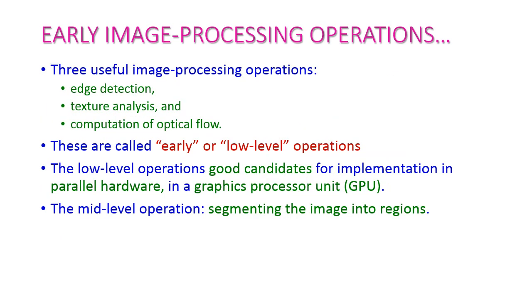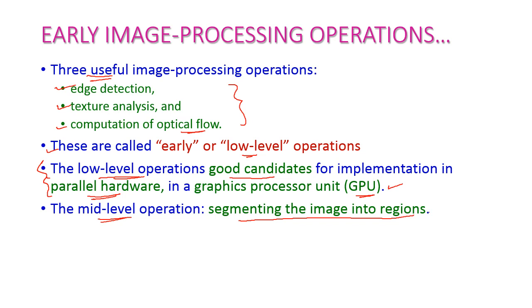There are three useful operations in image processing: edge detection, texture analysis, and computation of optical flow. These three are basic or low-level operations and are good candidates for implementation in parallel hardware — that is, GPU, or Graphics Processing Unit. When it comes to mid-level operations, these involve segmenting the image into regions.